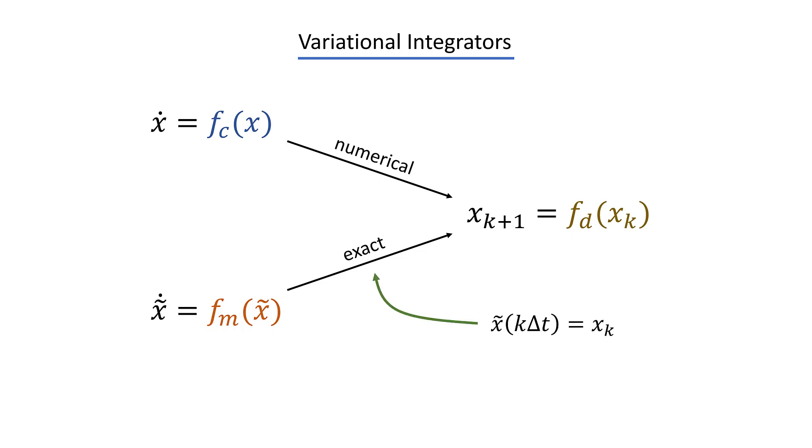To get some more intuition of why variational integrators actually perform better than regular discretization schemes, let's look at some examples. If we have a differential equation, for example, x dot equals f of x, and we discretize it, what we actually do is we find the exact discrete version of a different differential equation, often called the modified equation. And exact in this case simply means that the two equations at least theoretically overlap at the discrete naught points.